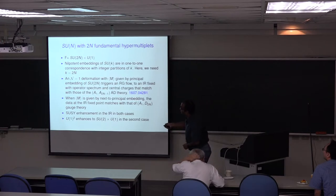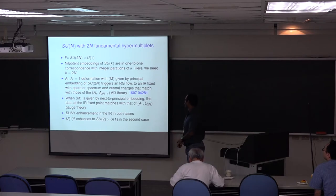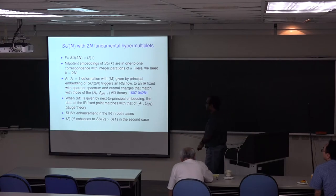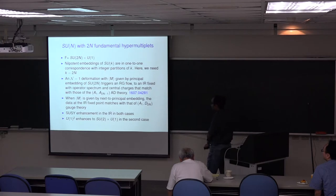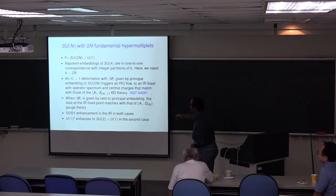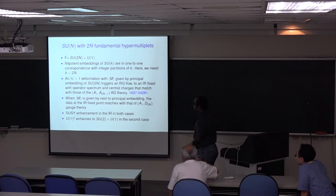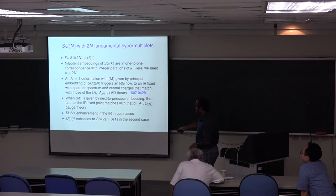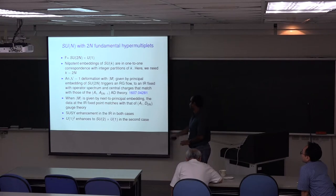We also found that when the vev is given by the next-to-principal embedding — an embedding which only preserves a U(1) squared symmetry — the data at the IR fixed point matches with that of A1,A(2N). So SUSY enhancement occurs in both cases. In the second case, the next-to-principal embedding only preserves a U(1) squared subgroup of the SU(2N) times U(1) flavor symmetry, and if that gets enhanced to SU(2) times U(1), it must be acquiring the flavor symmetry of that Argyres-Douglas theory.